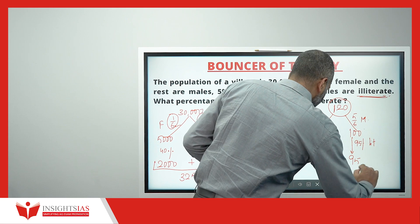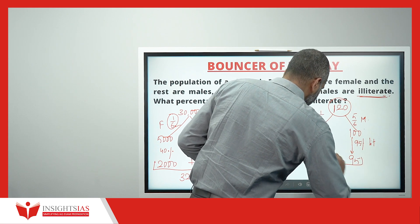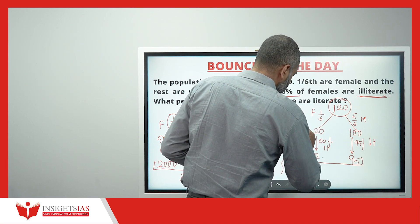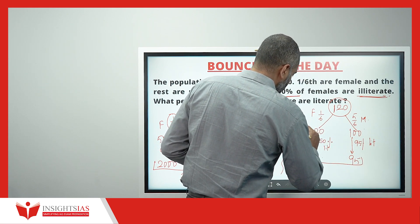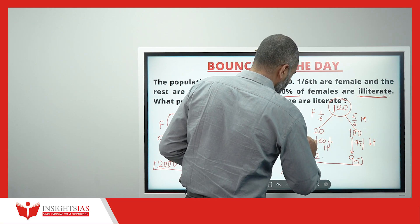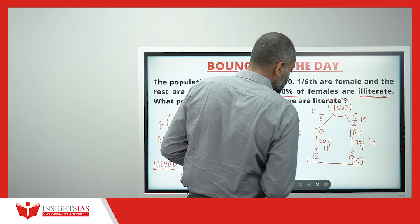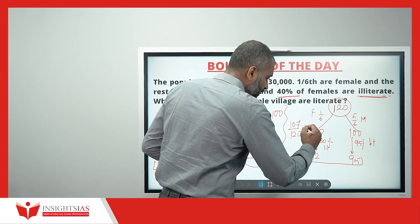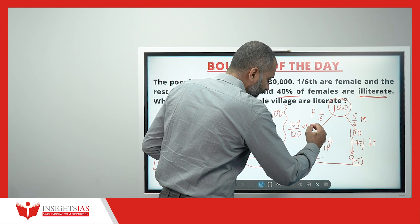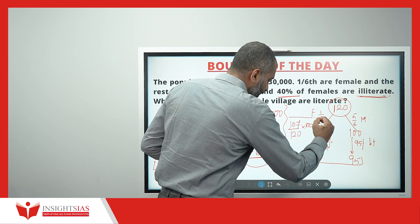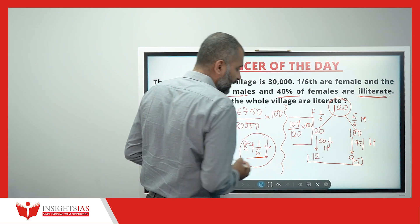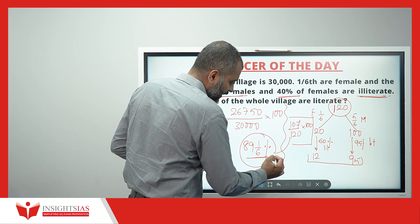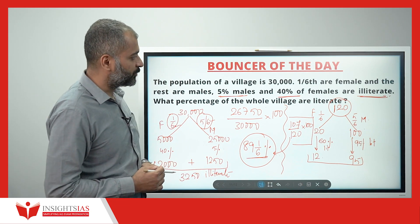Totally, 95 + 12 = 107 are literate out of 120. This is the number of literate population in the village. If I multiply this by 100, I will get 89 1/6 percent.